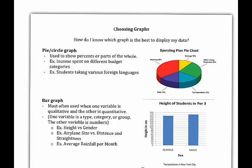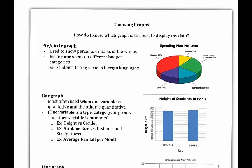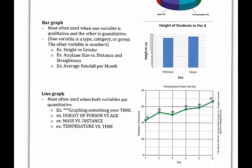For a bar graph, it's a little bit different. For a bar graph, we're going to be looking at things where one variable is qualitative and the other variable is quantitative.